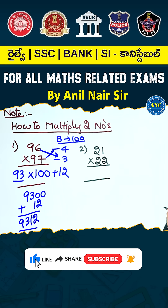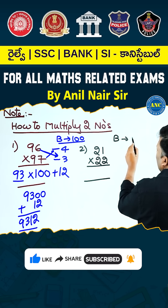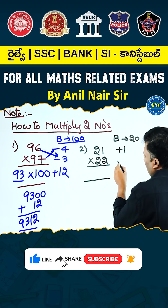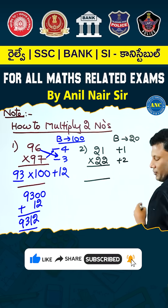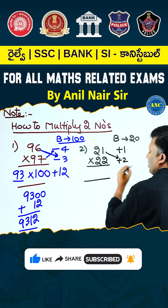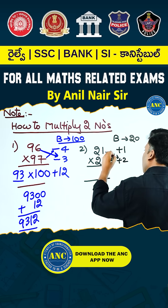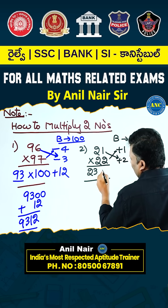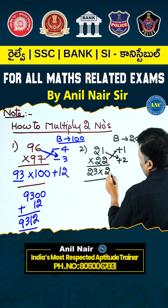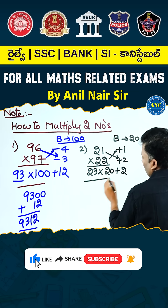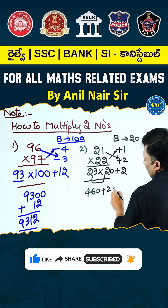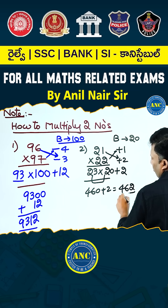21 and 22 are both nearer to 20, so the base is 20. 21 is 1 more than 20; 22 is 2 more than 20. Cross addition: 21 plus 2 is 23, and 22 plus 1 is also 23. Cross result is 23 into 20. Plus into plus is plus; 1 times 2 is 2. 23 times 2 is 46, so 460 plus 2 equals 462.